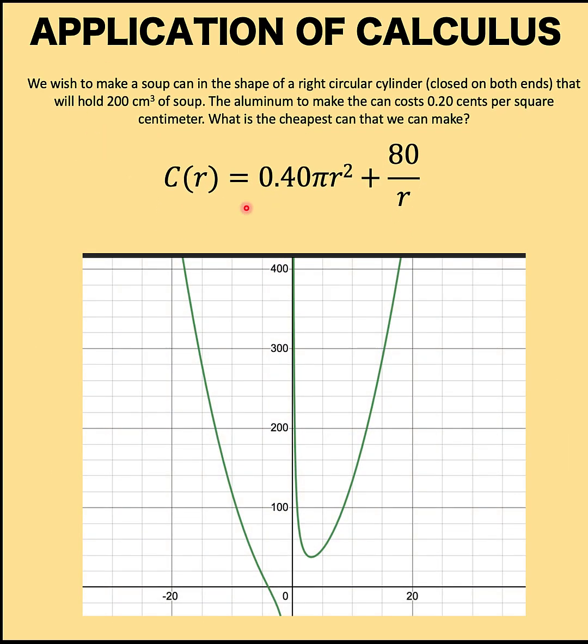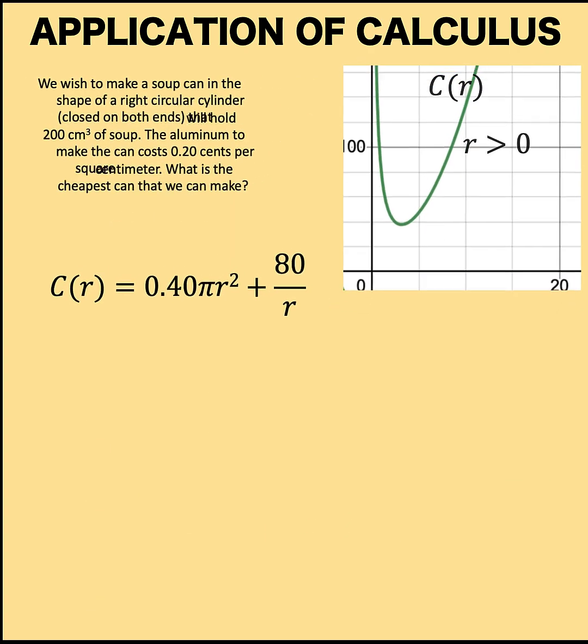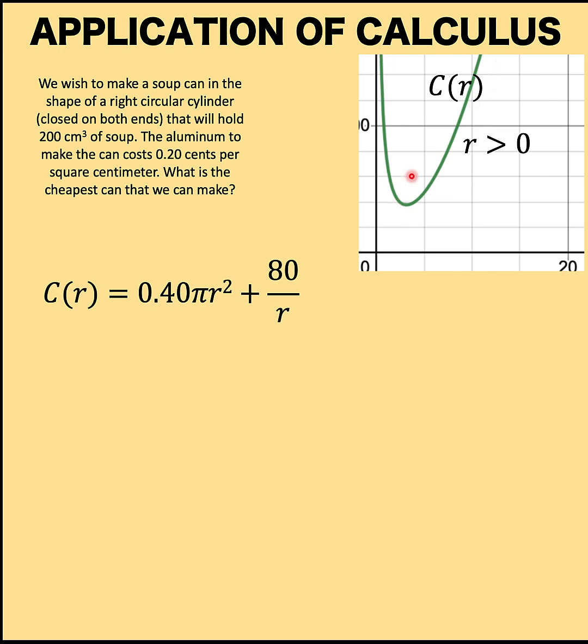Let's investigate this cost function. The graph looks like this. There are two parts. We have this part at the left side of this y-axis and there is another part at the first quadrant. Now, since r is greater than 0, we are only interested in this part at the right side of the y-axis. And so, let's focus our investigation at this curve. We want to find the minimum value. Therefore, we are after this lowest point here.